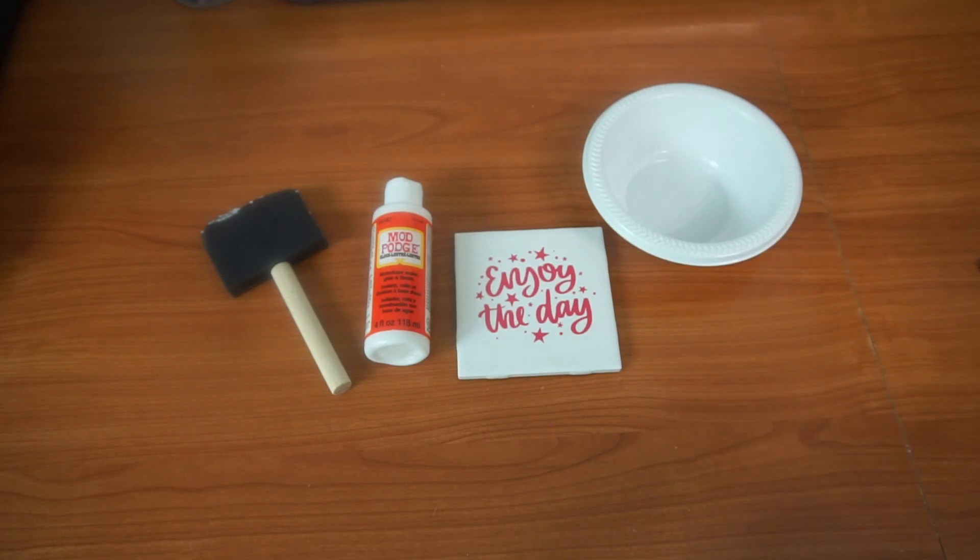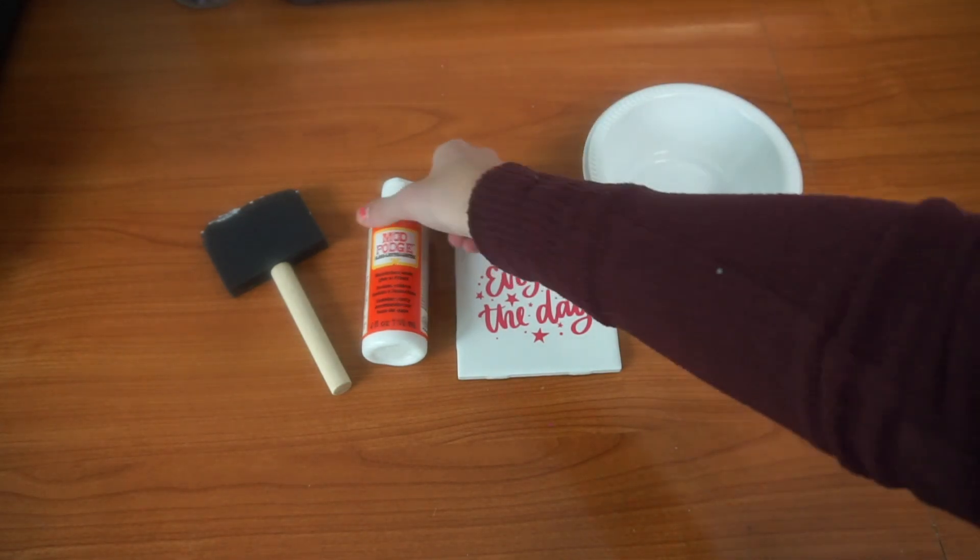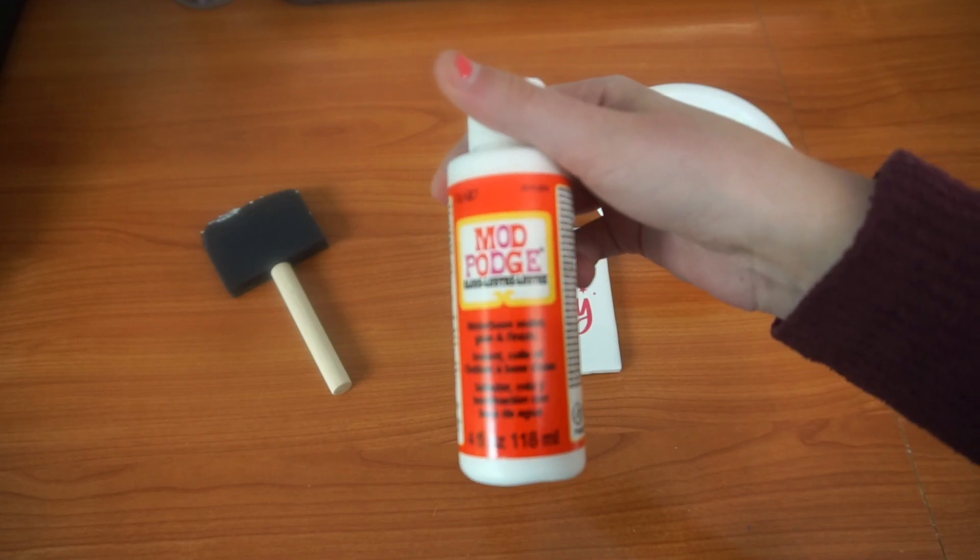The materials you will be needing is a sponge brush, gloss mod podge, and a plastic bowl to put the mod podge in.